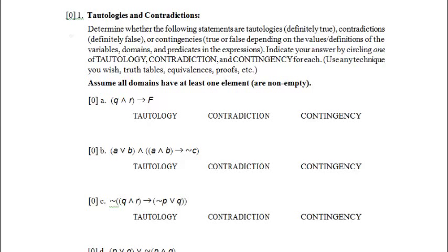Welcome to Problem 1 of the Computer Science 121 2013 Winter 2 Final Practice Exam Sample Problems. I'm going to start by reading the prompt on this question. Determine whether the following statements are tautologies — statements that are definitely true — contradictions — statements that are definitely false — or contingencies — statements that can be true or can be false, depending on the values we give to the variables, or the definitions of domains and predicates in the statements, if those are predicate logic statements.